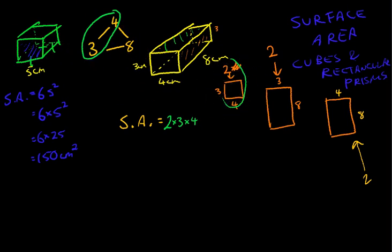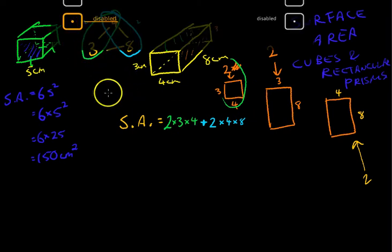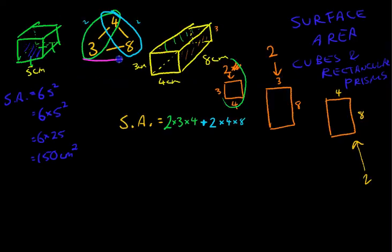And then I'm going to multiply these two, and I'm going to do two of them. So I did two of these, I'm going to do two of these. So add two by four by eight. And then I'm going to do these ones, so add two by three by eight.